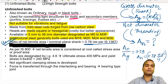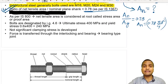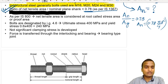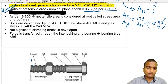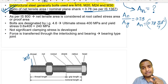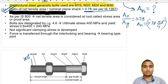This ratio of 0.78 is very important. As per IS 800, the net tensile area is considered at the root, also called the stress area or proof area. The root is the region between two threaded sections. At the root, we consider that diameter to get the net tensile area. Since we do not know the exact diameter at the root, we use this ratio.